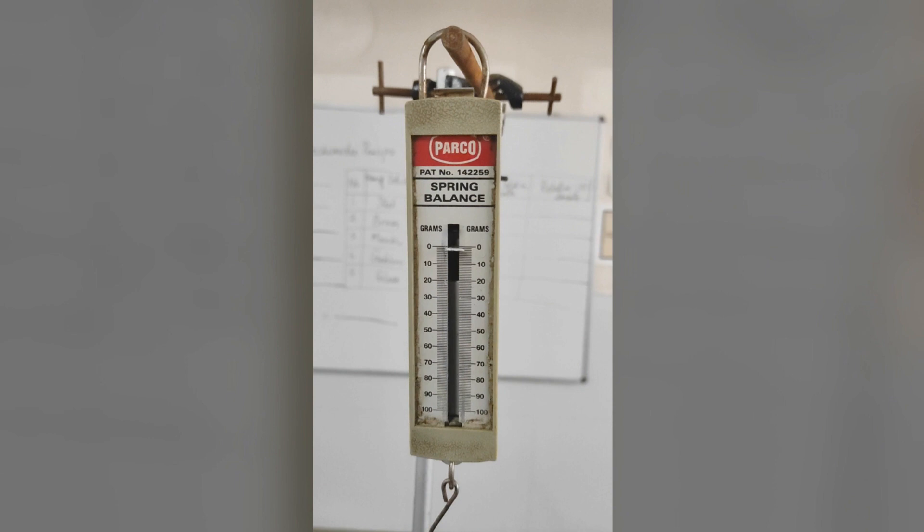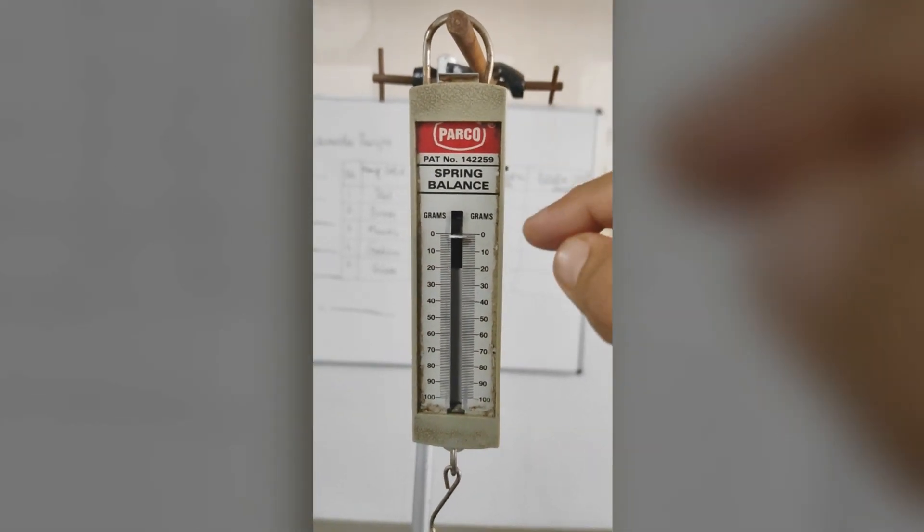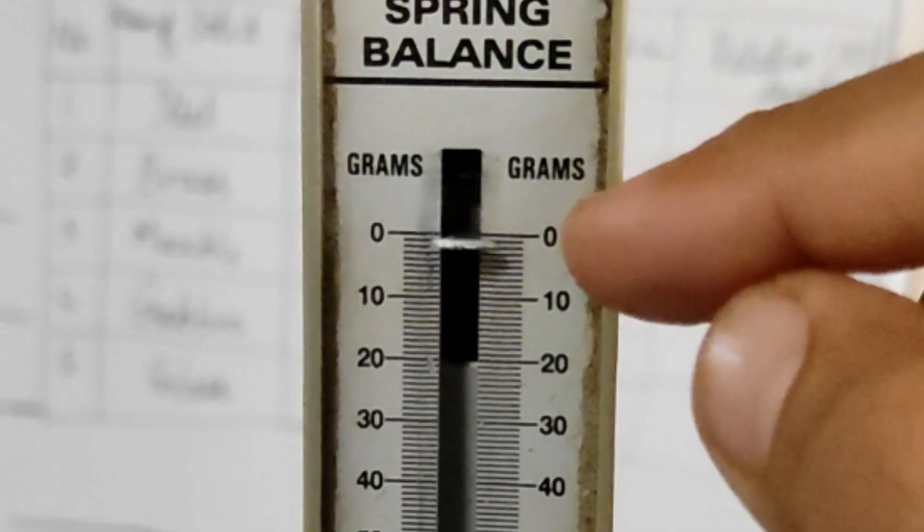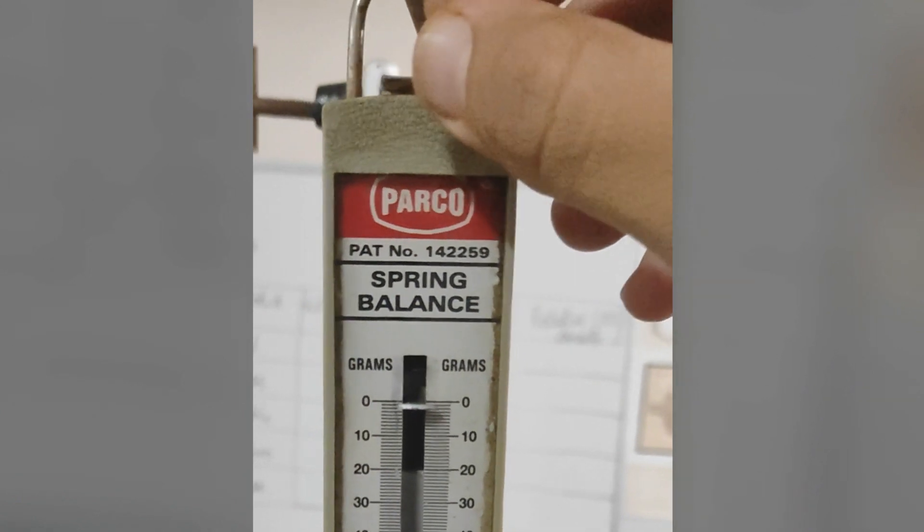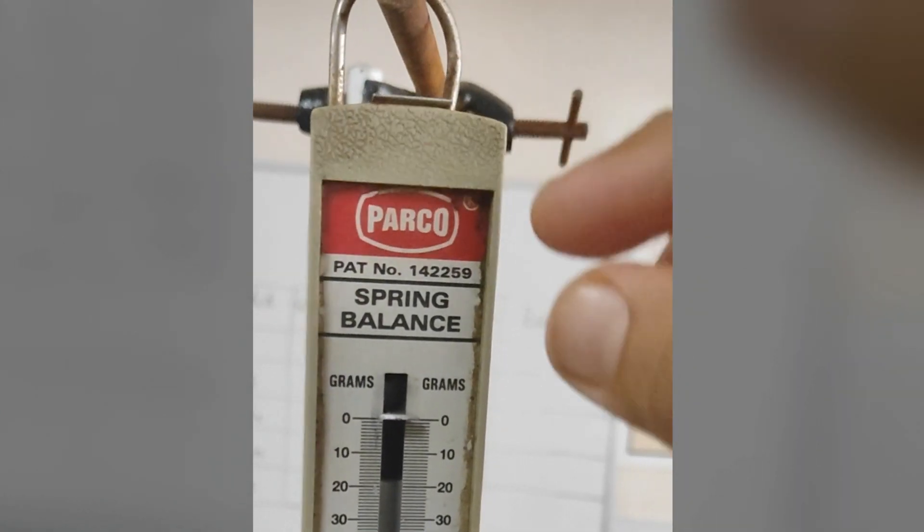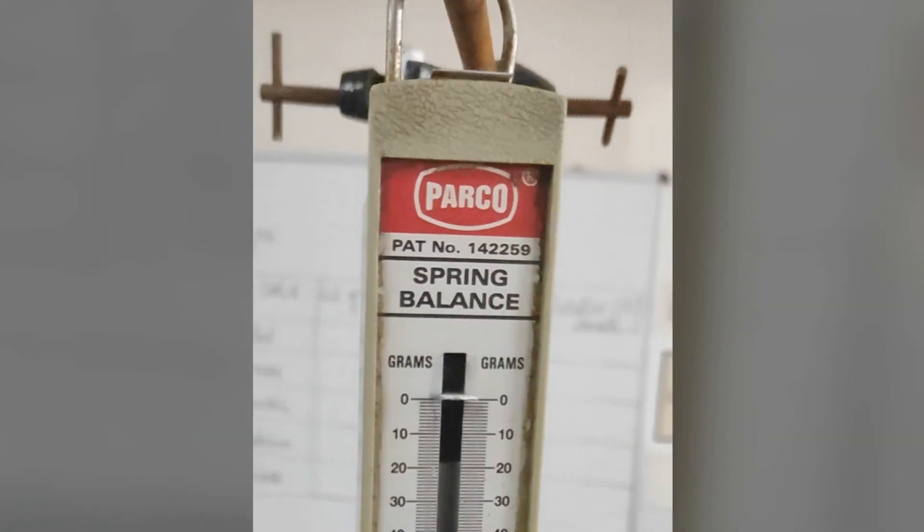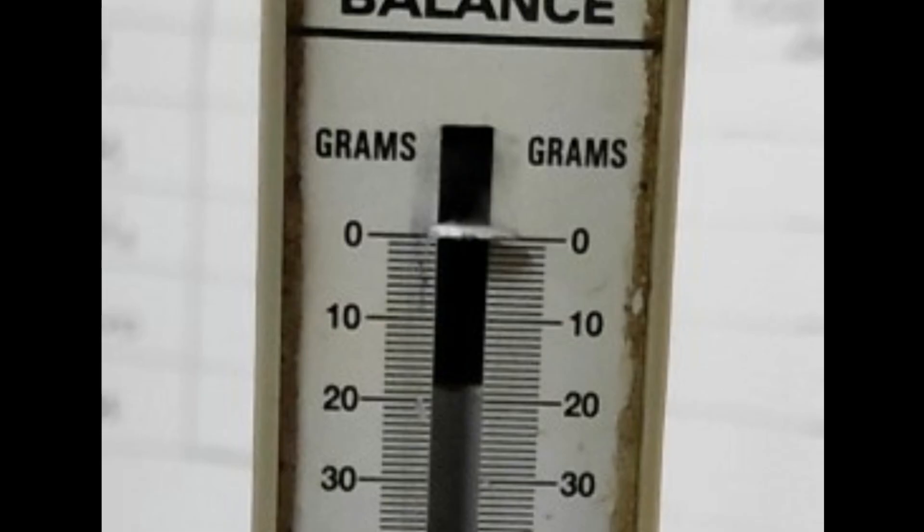So, let us start. Suspend the spring balance on a stand and check whether the pointer of the spring balance is set to 0 or not. If not, as you can see here, we must set it to 0. Notice that the spring balance is now set to 0 and ready to give the correct readings.